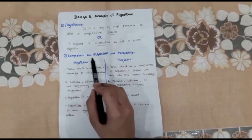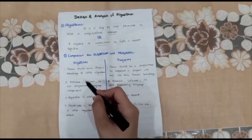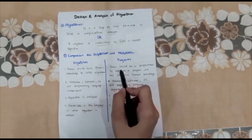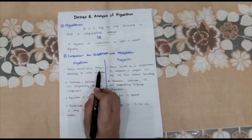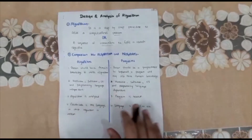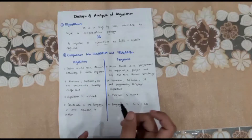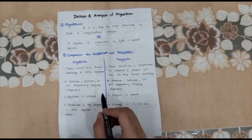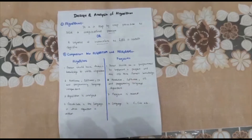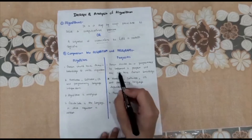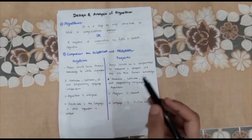Next, we move to the comparison between algorithm and program — two terms we are often confused with. The first point: a person should have domain knowledge to write an algorithm. Without domain knowledge, he won't be able to write an algorithm. But for a program, a person should be a programmer so that he can implement it, and may also have domain knowledge.